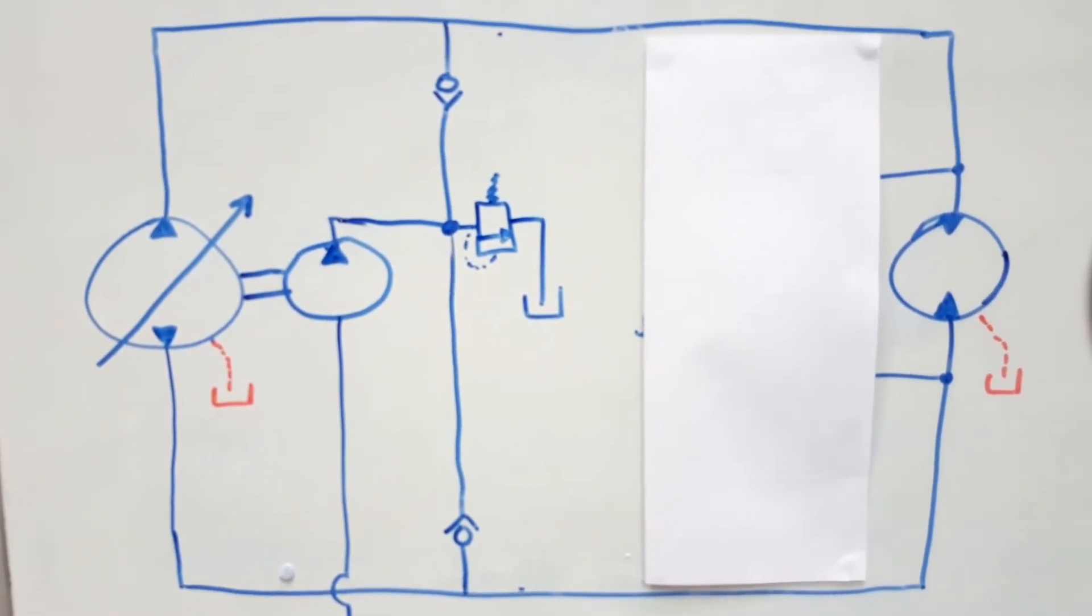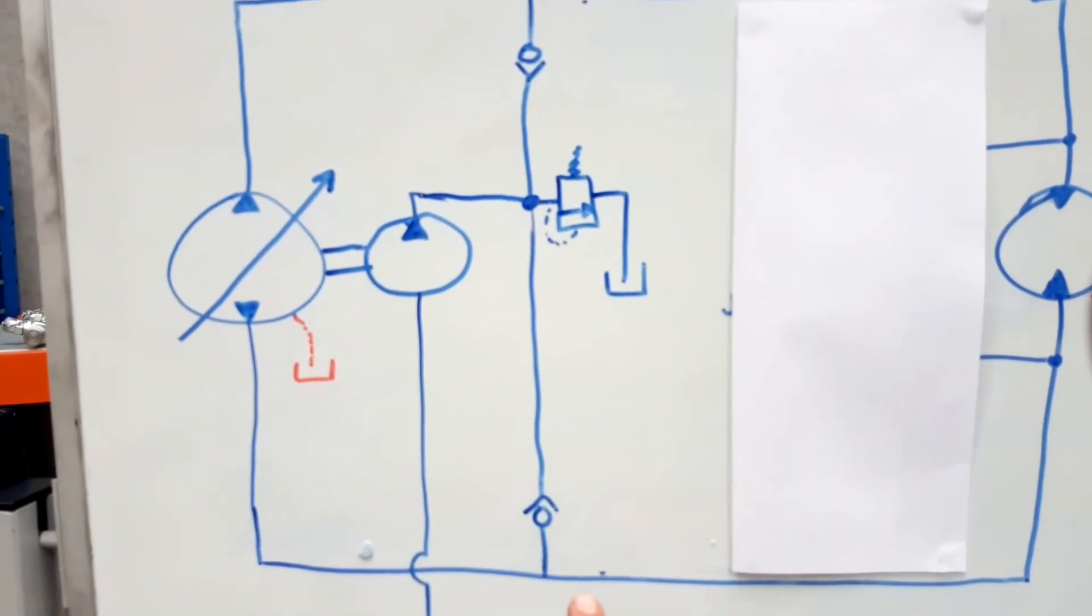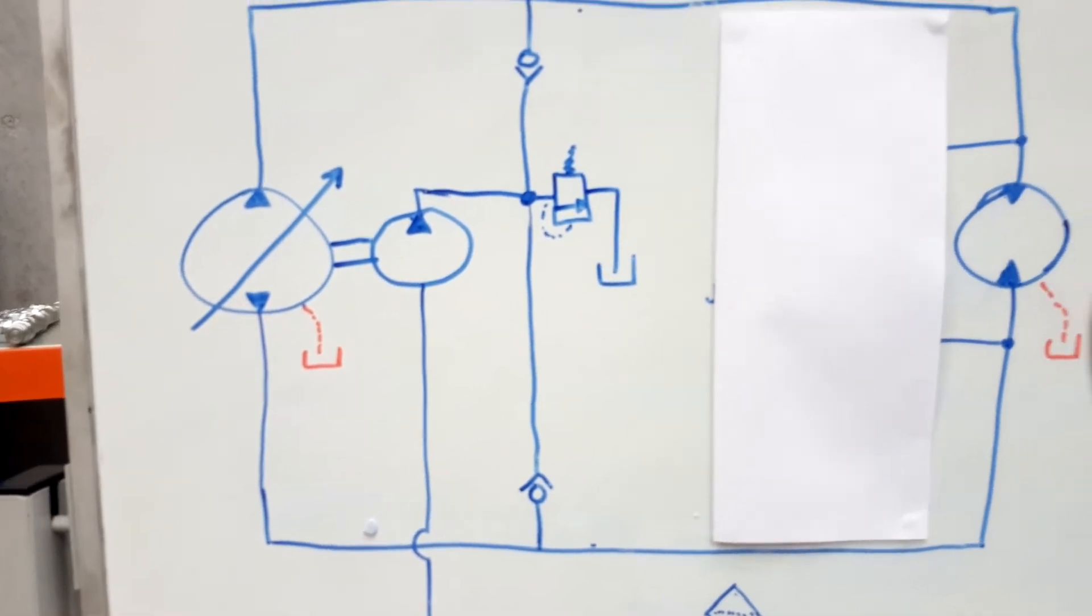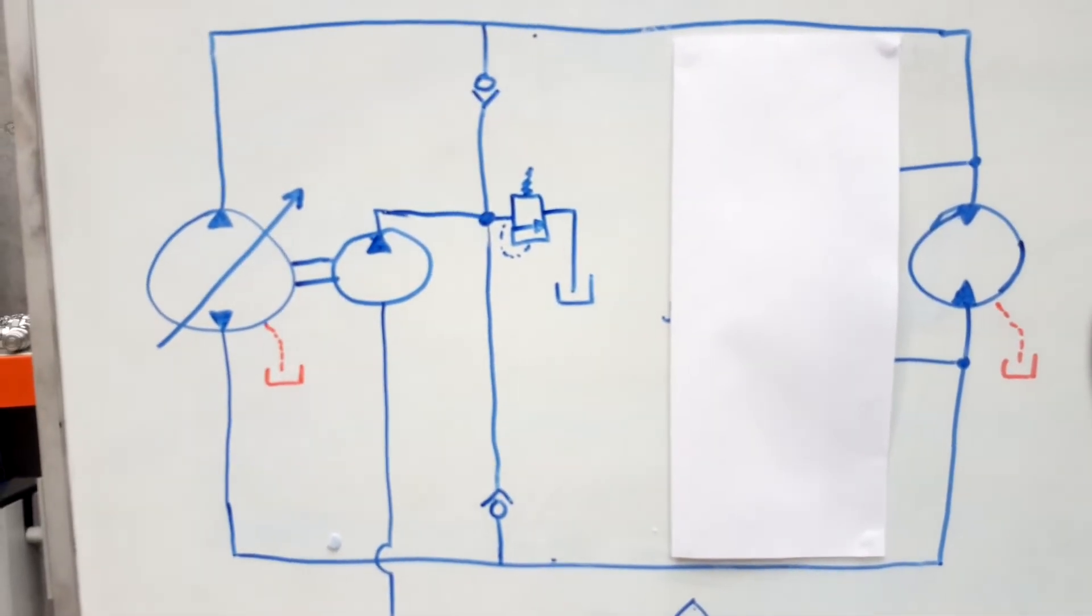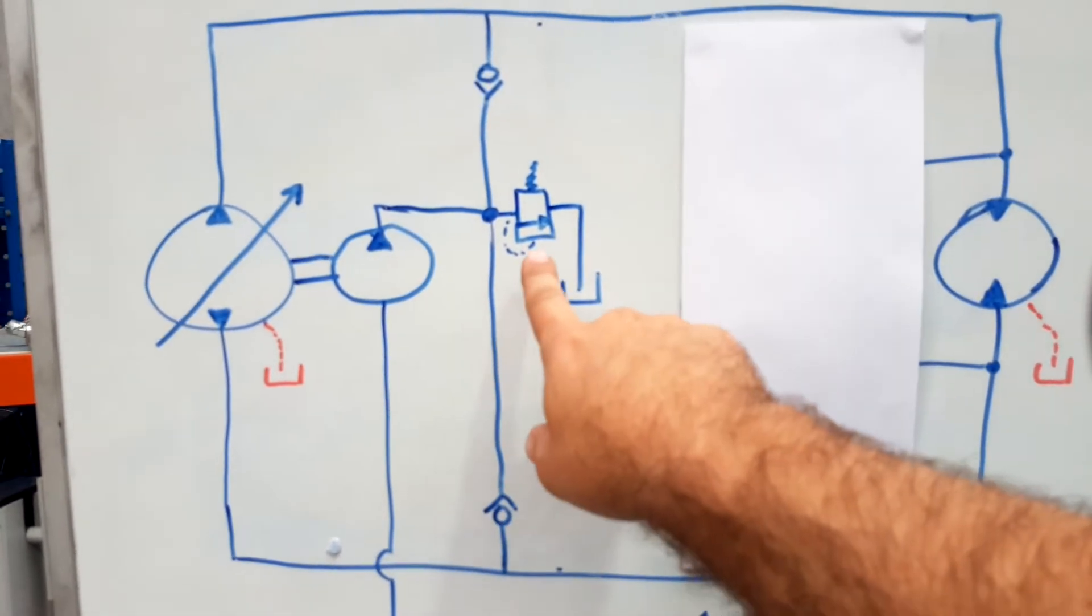So while we have high pressure up here, this check valve is closed and this one is allowed to open, and we can push oil out into the loop and make sure that we keep it full and also help with cooling. Because we have a boost pump here or a charge pump, we've also got what we know as our charge relief or our boost relief.